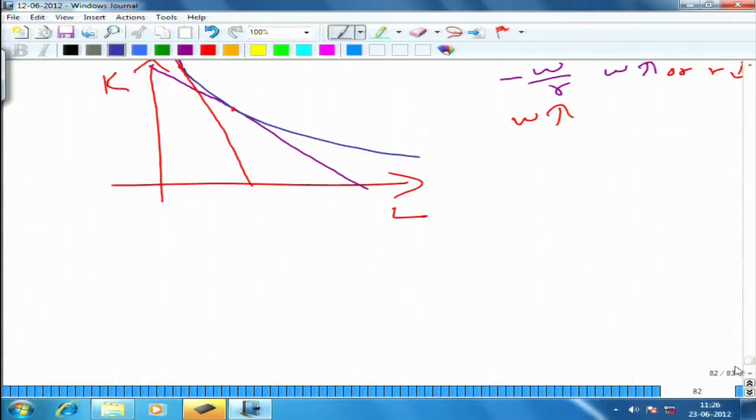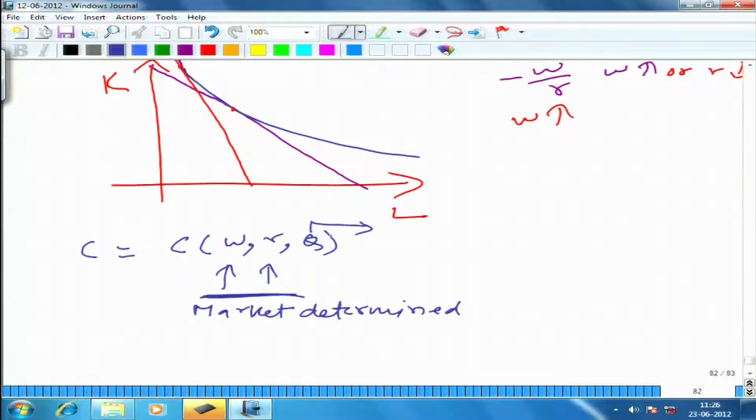We have learned and derived that the cost function is a function of w, r, and output. Notice that w and r are given by the market, typically market-determined, and q is decided by the firm. So for a firm which is not able to influence w and r, the cost function is a function of output.